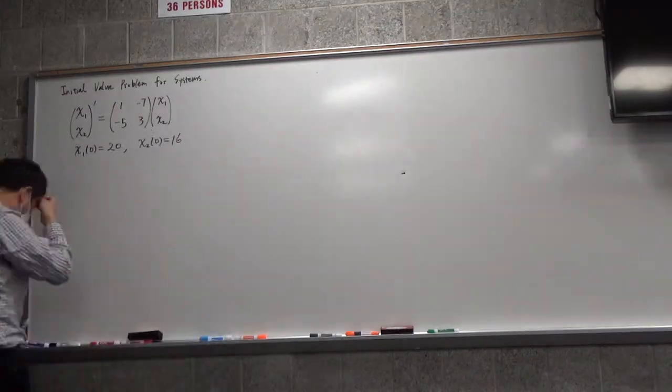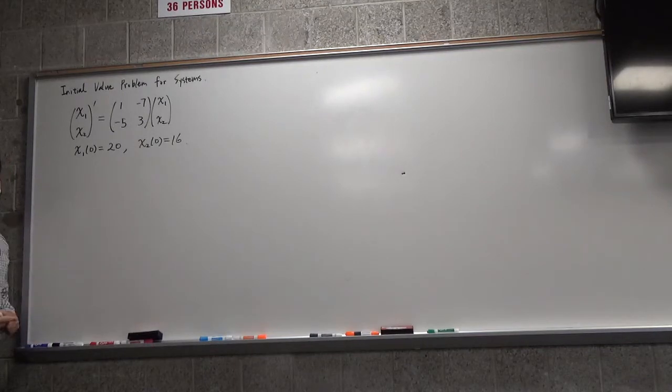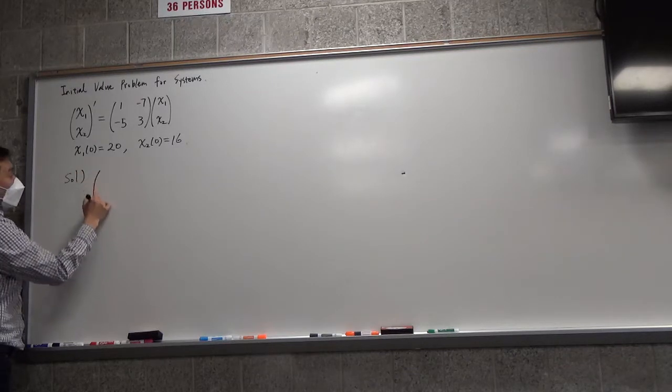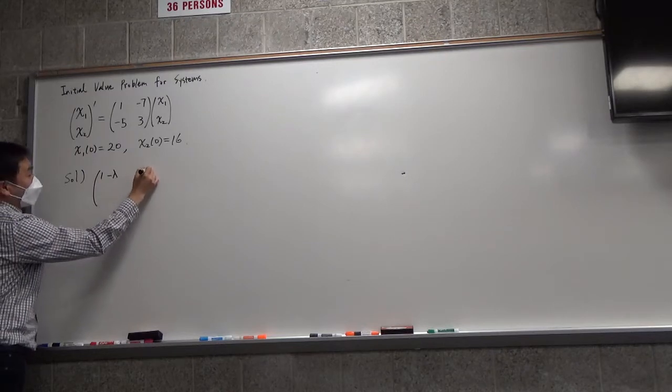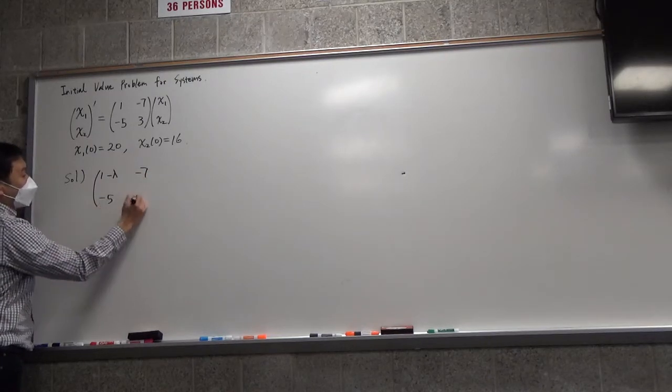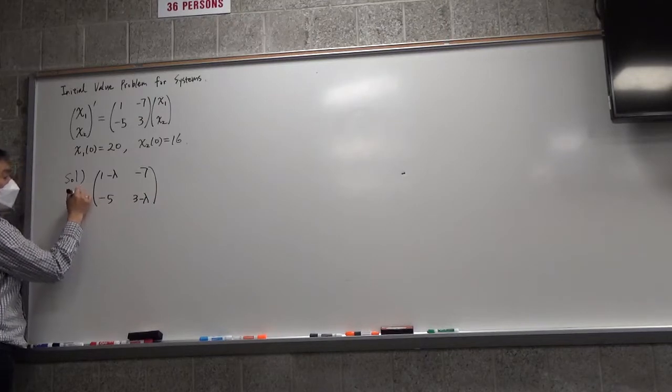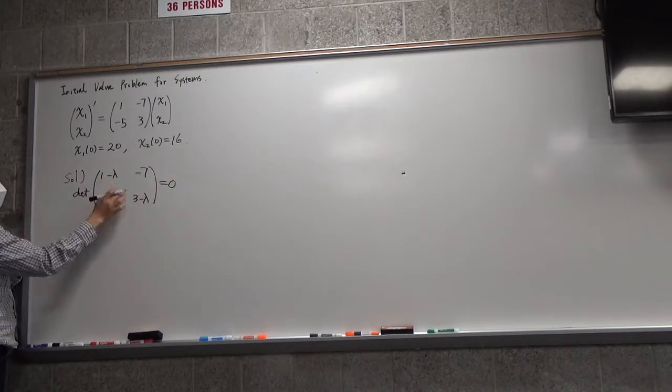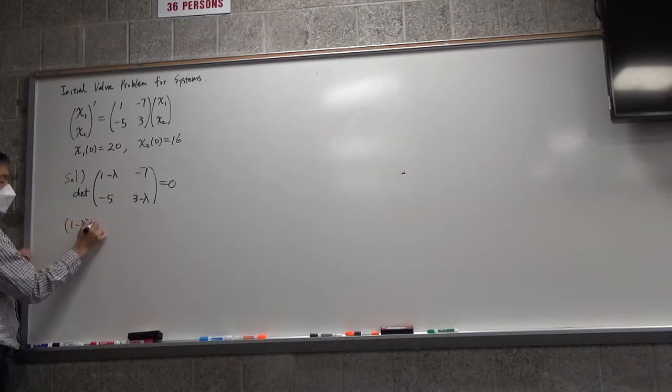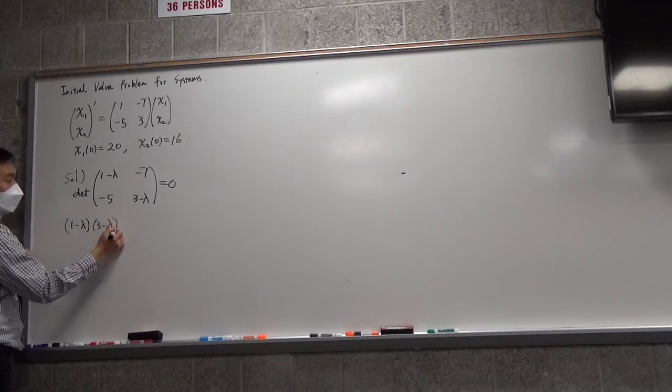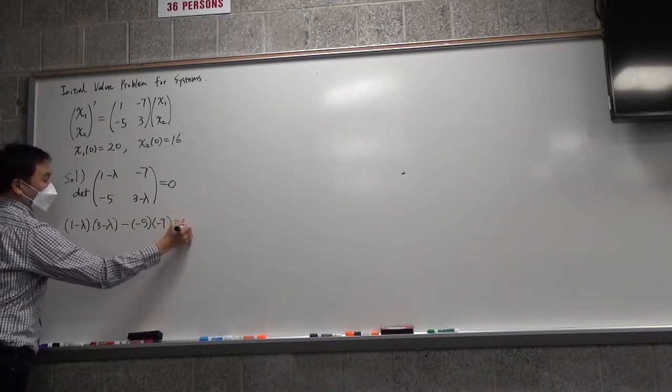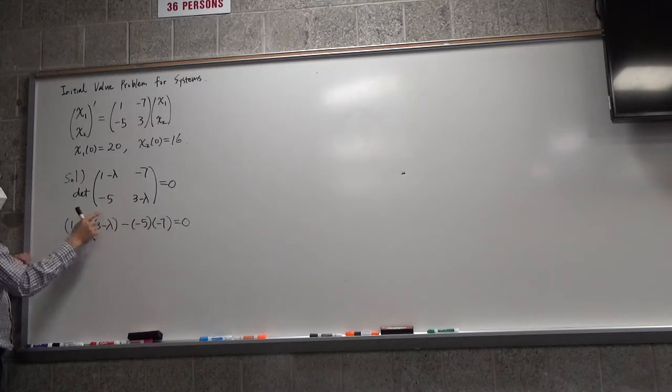So let's solve this. As usual, we will find the eigenvalues first. So I'm going to do 1 minus lambda, negative 7, negative 5, 3 minus lambda, and its determinant has to equal 0. So that gives you 1 minus lambda times 3 minus lambda, minus negative 5 times negative 7 equals 0.